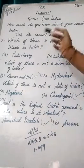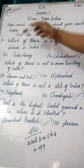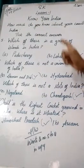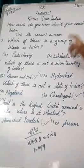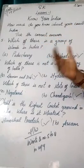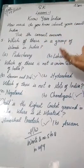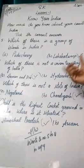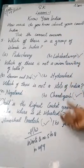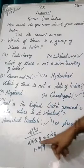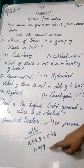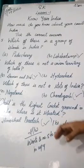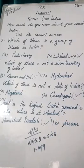Students, today you have to do questions number 5 to 8 as homework. Also write the names of all the union territories in India — how many union territories are there in India. Do questions 5 to 8 from your book as homework. Thank you.